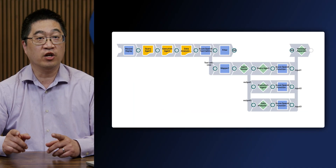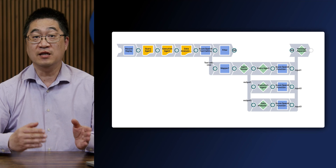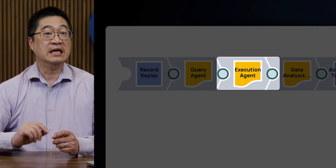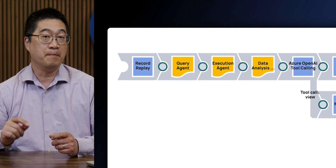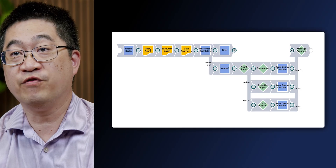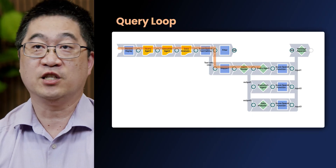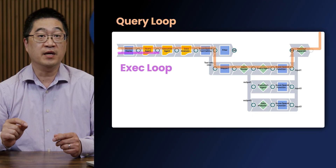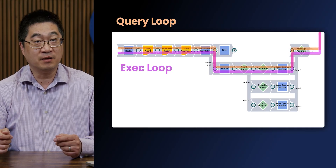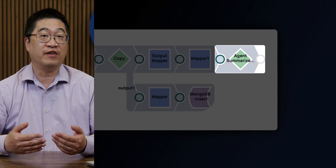In this case, it's calling our planning agent, which based on instructions from the main agent is either creating a new SQL query via the query agent or running a query. Each of these loops will have the results passed back up and a decision made on the next steps. The three SQL query refinements we saw earlier were three loops through the query agent plus execution agent, each loop being evaluated by the main pipeline and LLM to decide on next steps.